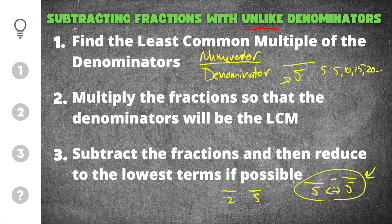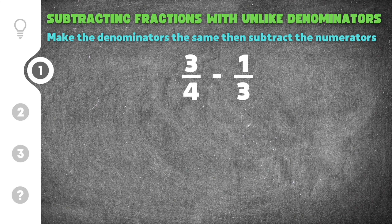Alright, let's get started on some practice problems on subtracting fractions with unlike denominators. The first problem gives us 3 fourths minus 1 third. In order to subtract these, the denominators have to be equal. Our denominator on this side is 4 and the denominator on this side is 3.